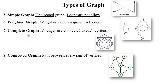Next is complete graph, where all edges are connected to each vertex — each and every edge is connected to each vertex. Next is connected graph, which means there is a path between every pair of vertices. All vertices are connected with each other by a single path. These are the types of graph.